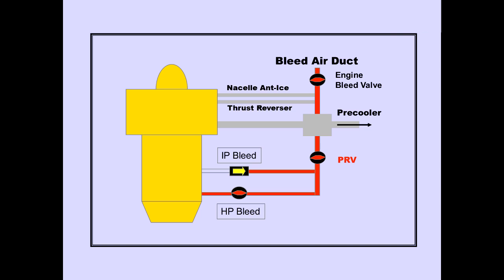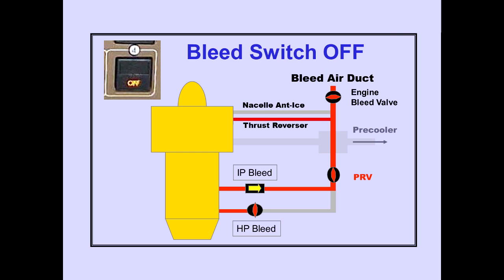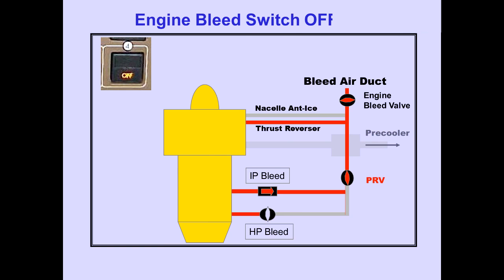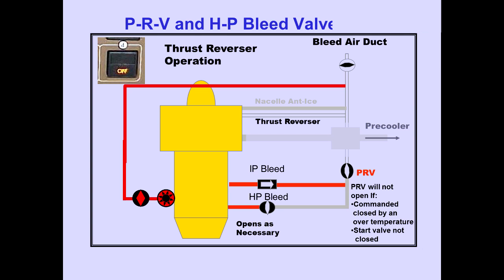Engine bleed air is used for nacelle anti-ice and thrust reverser operation, obtained downstream of the pre-cooler. With the engine bleed switch off, operation of nacelle anti-ice remains available, and the PRV will open if the HP bleed valve is closed — unless commanded closed by an over-temperature or if the start valve is not closed. Similarly, with the engine bleed switch off, thrust reverser operation remains available; the PRV and HP bleed valves will open as necessary, unless closed by an over-temperature or if the start valve is not closed.